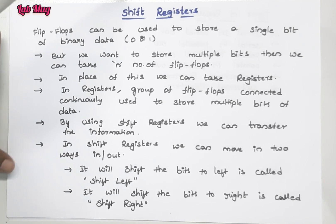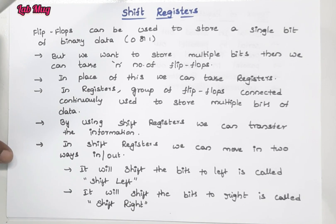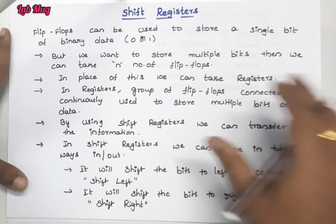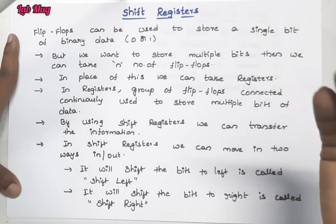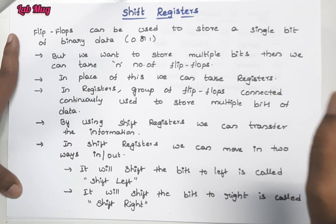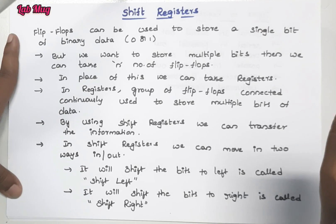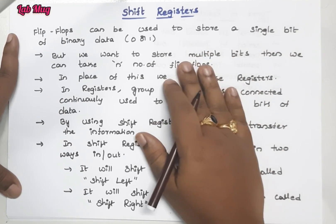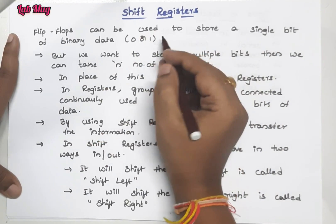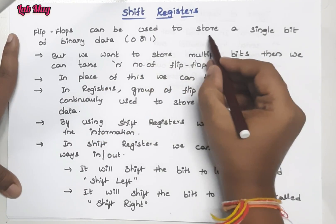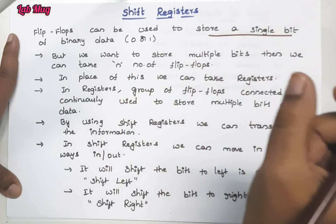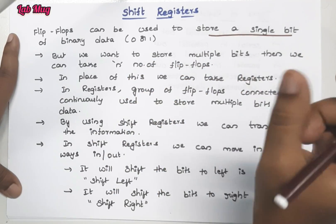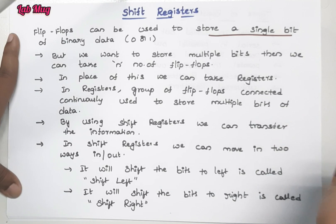Hi everyone. Previous class topic is complete, so the next topic is shift registers. First of all, we covered flip-flops, and now we move to registers. Flip-flops are used to store a single bit of binary data — bit means zero or one.